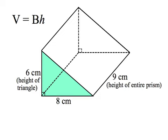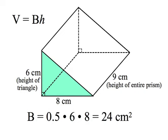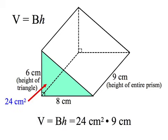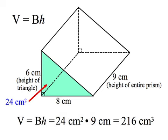First, let's find the area of the triangle: one half the base times the height is one half of six times eight, which gives 24 square centimeters. Then to get the total volume, we take that 24 square centimeters and multiply it by nine, so the volume of this triangular prism is 216 cubic centimeters.